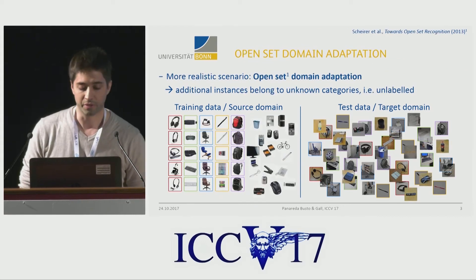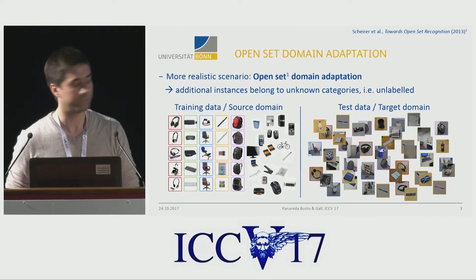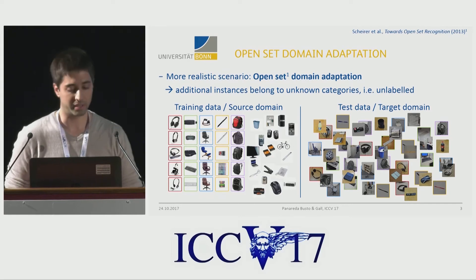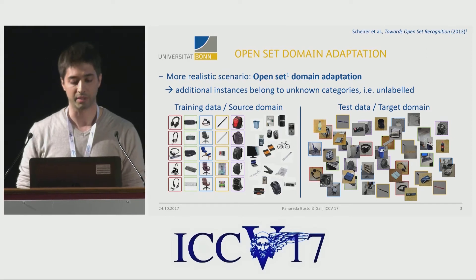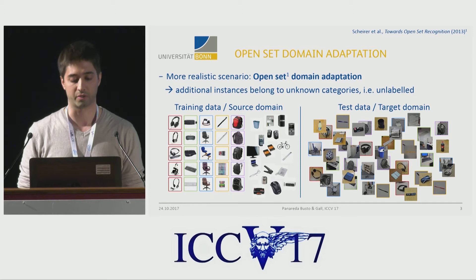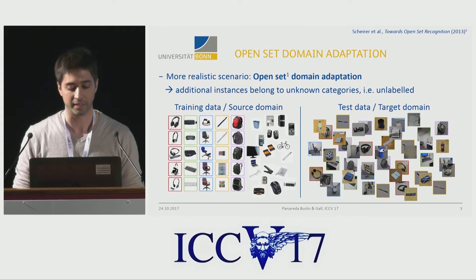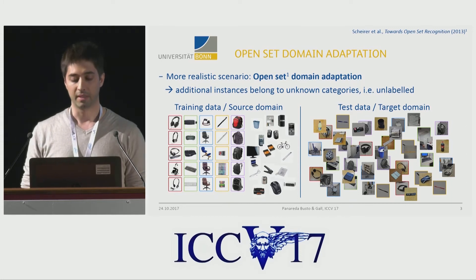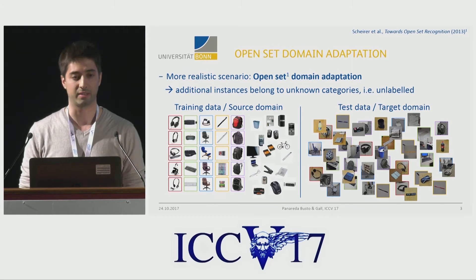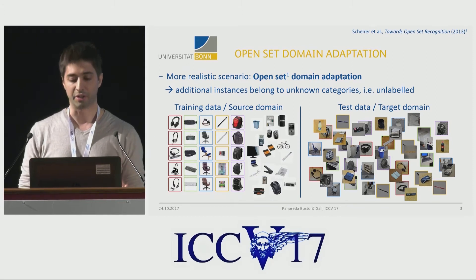This is why we introduce OpenSet domain adaptation. If we look again on the left-hand side, we see the same shared classes. But at the same time, we also find unknown samples that we have no interest in, or we have to discard somehow. The same happens in the target domain — we find the same common classes, but there are also new unknown samples that we have to discard. This scenario, for us, is more realistic.